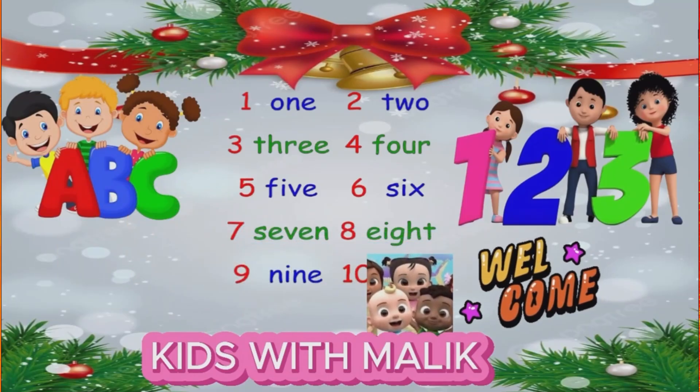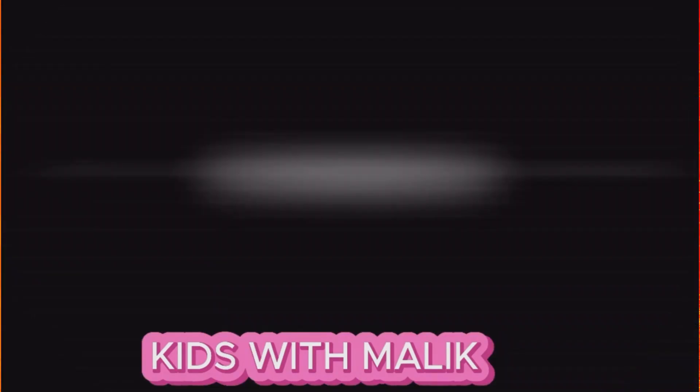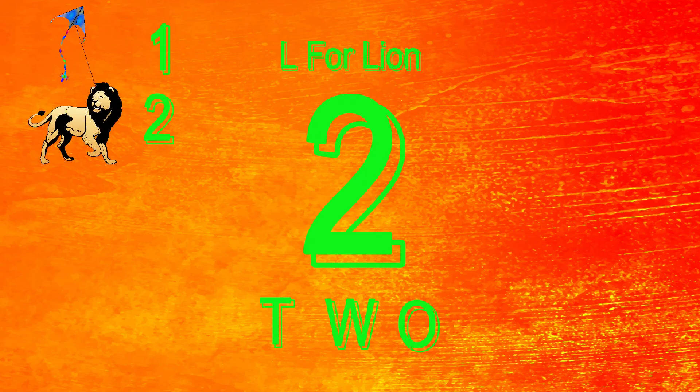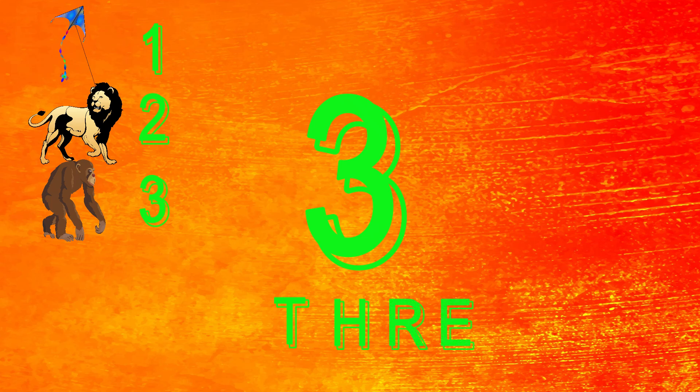Welcome to my channel Kids with Malik. 1 - O N E. 1 - K for kite. 2 - T W O. 2 - L for lion. 3 - T H R E E. 3 - M for monkey.